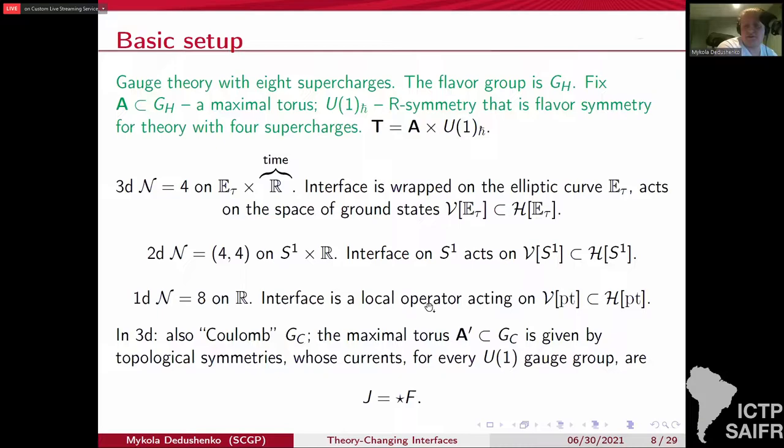In the two dimensional case, we just replace the elliptic curve by S^1 and in the one dimensional case by a point. And additionally, in the three dimensional case, there is additional symmetry, the Coulomb branch symmetry, whose maximal torus is realized by the topological symmetries, as is well known.